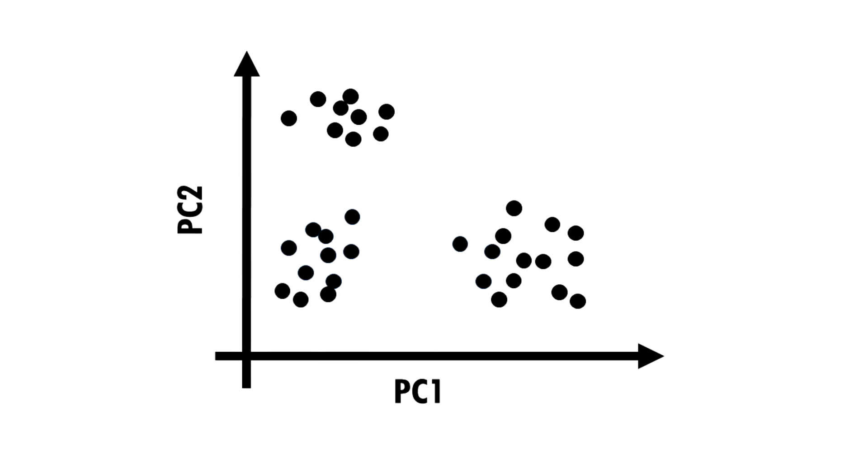So this is our PCA. Each point is one of our patients. Patients with similar gene expression profiles are now clustered together. Just glancing at this plot, we can see that there are three clusters of patients. This means that overall we have three distinct gene expression profiles. And this is very interesting because it might mean that this group of patients will respond better to drug X and this other group of patients will respond better to radiotherapy.